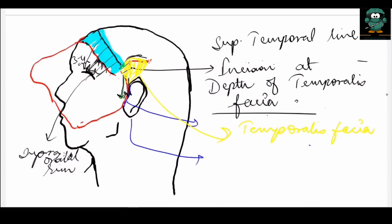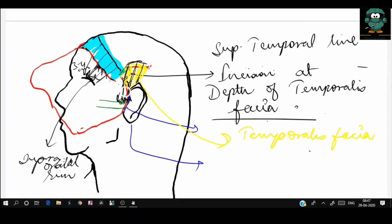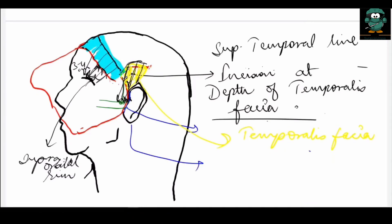Laterally, the temporalis fascia is dissected inferiorly, extending up till the root of the zygomatic arch. A word of caution: the lateral incision over the temporalis fascia should not be placed above the superior temporal line, as it may nick the temporalis muscle which may bleed. After the temporalis fascia is dissected to the root of the zygomatic arch, an incision is placed from that point in a superior and forward direction at approximately 45 degrees until it meets the horizontal incision placed earlier.